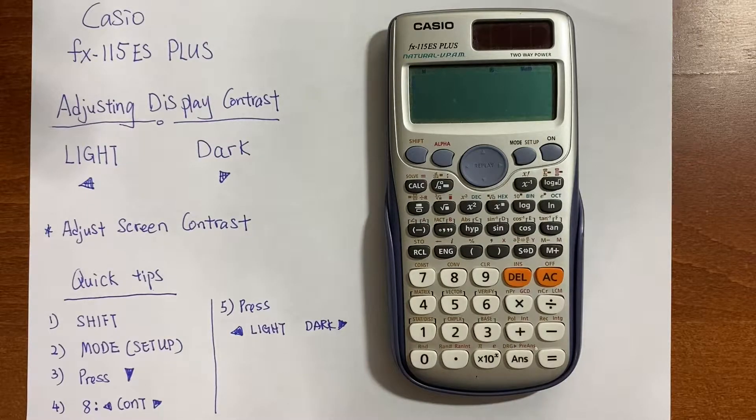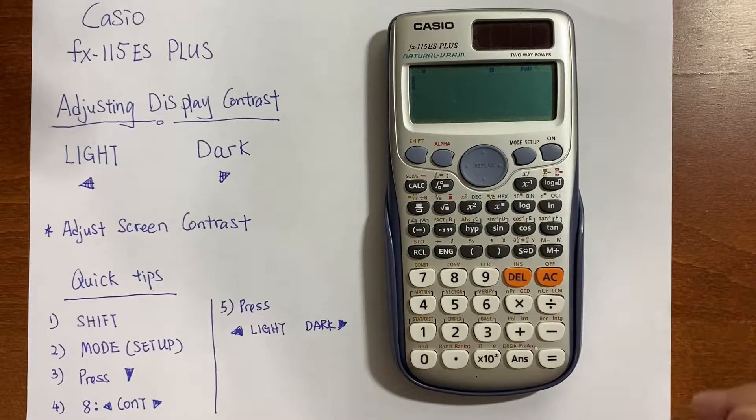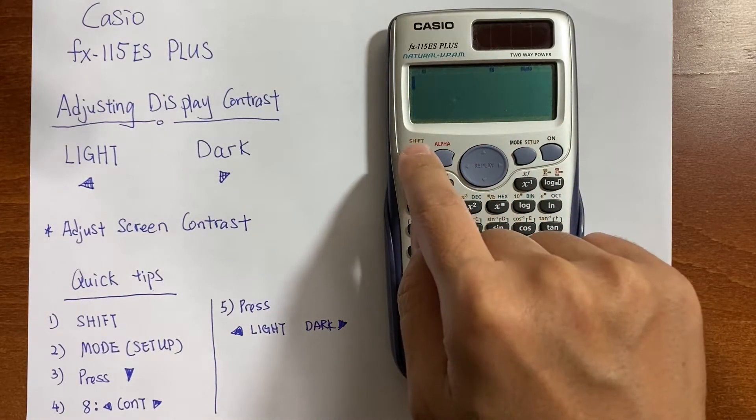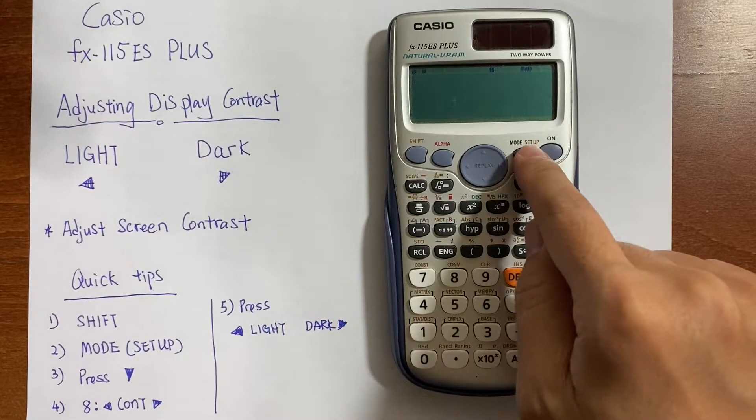Sometimes it can be lighter or darker for your own preference. First step, press shift and then mode.